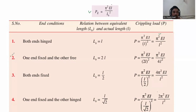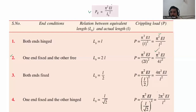Second boundary condition: one end fixed and other end free. Here LE is equal to 2L. Just put LE equal to 2L in the equation. We get pi square EI divided by 2L square, which gives pi square EI divided by 4L square.